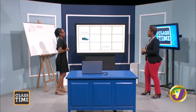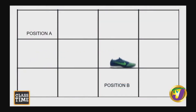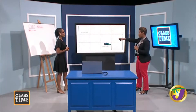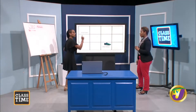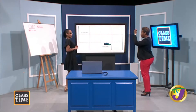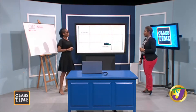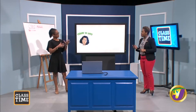Let's watch the shoe move again. The shoe was in the box right under position A. It moved two boxes — two units — to the right, and then one unit downward. So two units to the right and then one unit downward. That's important to note.